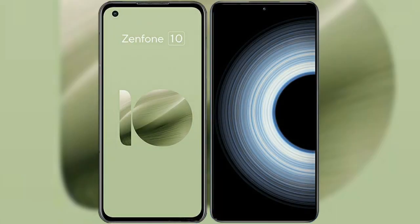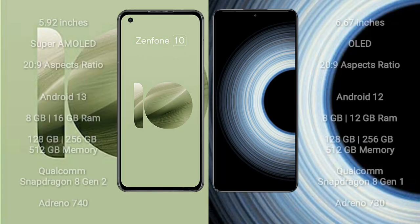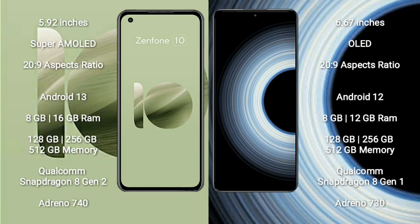I will compare the new Asus Zenfone 10 with Redmi K50 Ultra. Asus Zenfone 10 comes with a 5.92-inch Super AMOLED display and Snapdragon 8 Gen 2. Redmi K50 Ultra comes with a 6.67-inch OLED display and Snapdragon 8 Gen 2.